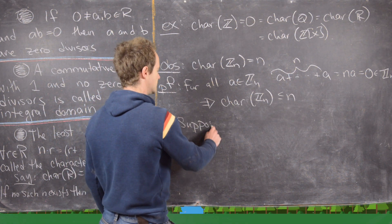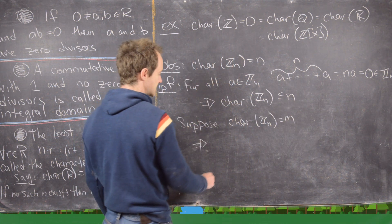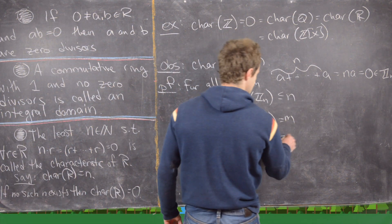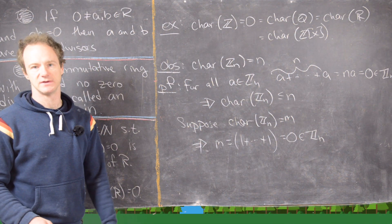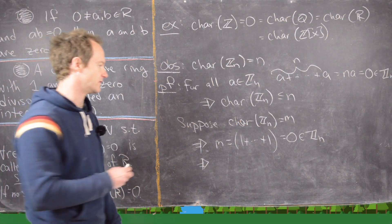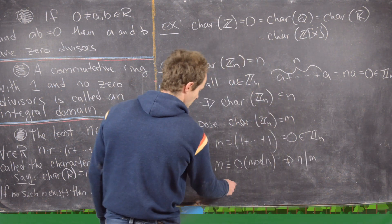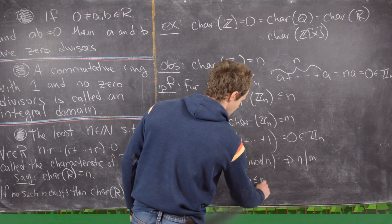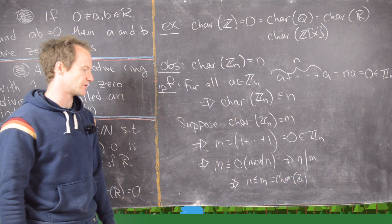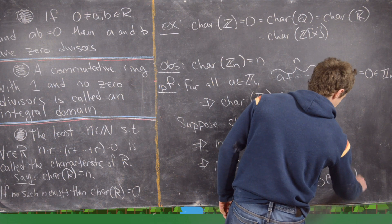Now suppose that the characteristic of Zₙ equals m. That means if you take m — recognizing it as one added to itself m times — you're supposed to get zero inside Zₙ. Translating this into modular arithmetic, that's the same as saying m is congruent to zero mod n, which means n divides m, which means n ≤ m = char(Zₙ). So we have char(Zₙ) ≤ n and n ≤ char(Zₙ), therefore char(Zₙ) = n.